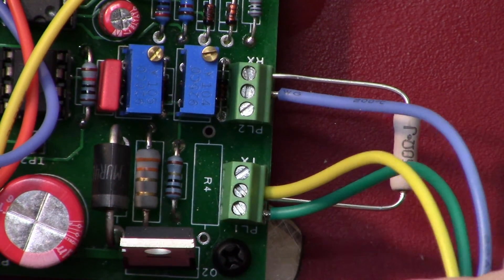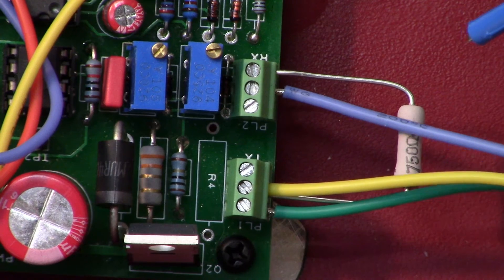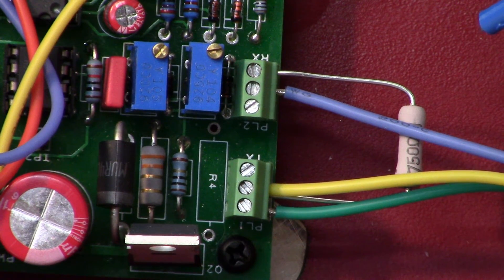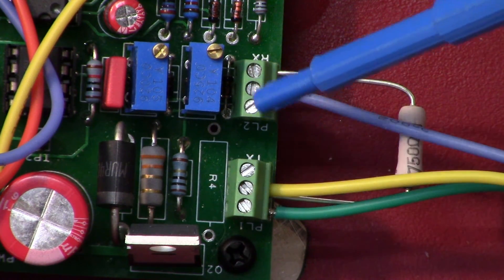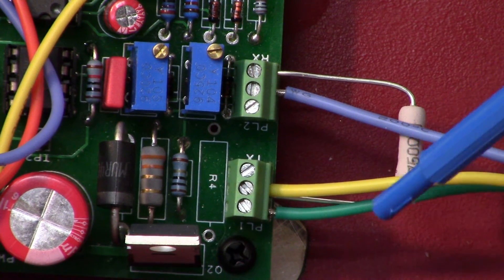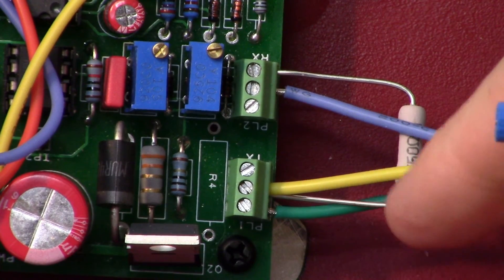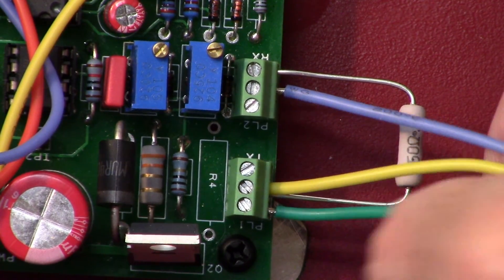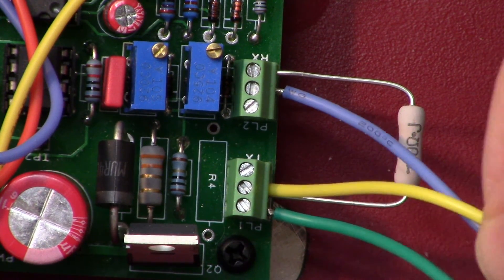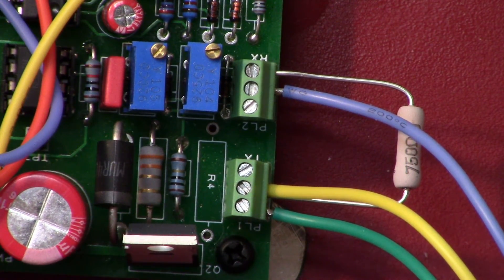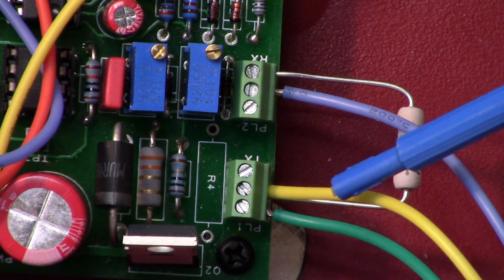Alright, back up here, hopefully a clear shot of the PCB. Once again, transmit, receive. So we've got on pin 1 of the transmit I've got my trace wire.